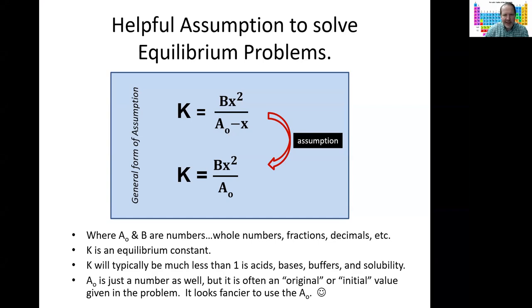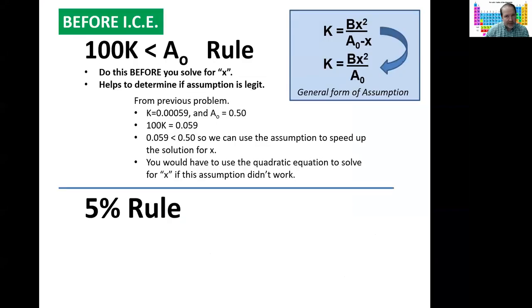And you can see some explanations there. A and B are just numbers. A₀ is a fancy number. And then we have an equilibrium constant. Now, before you do the assumption, we do 100 times K and see if it's less than the A. If it is, we can use the assumption.